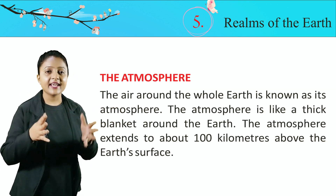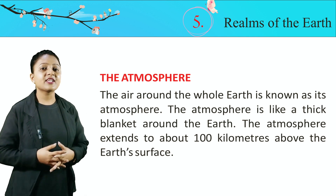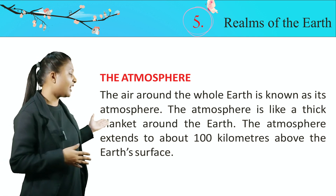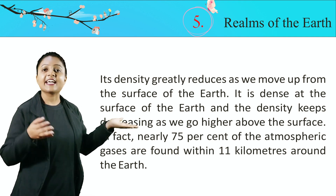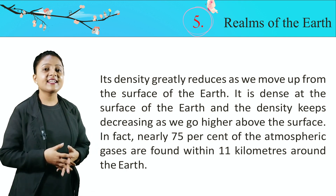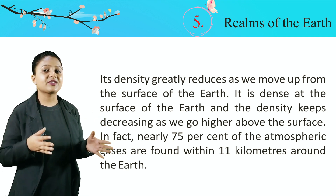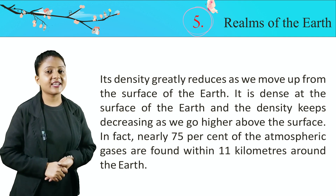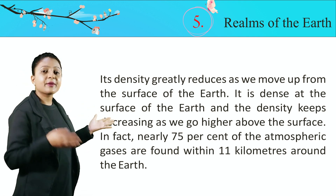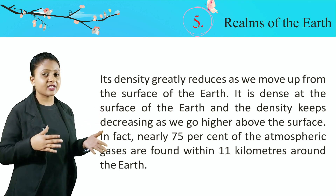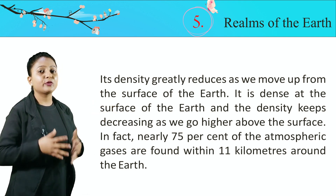The Atmosphere. The air around the whole Earth is known as its atmosphere. The atmosphere is like a thick blanket around the Earth. The atmosphere extends to about 100 kilometers above the Earth's surface. Its density greatly reduces as we move up from the surface of the Earth. It is dense at the surface, and the density keeps decreasing as we go higher. Nearly 75% of the atmospheric gases are found within 11 kilometers around the Earth. Jo air Earth ke charo taraf envelope banati hai, use atmosphere kehte hain. Atmosphere mein zyaada dense air Earth ke zyaada kareeb hoti hai, aur jaise jaise hum upar jaate hain, density kam hoti jaati hai.